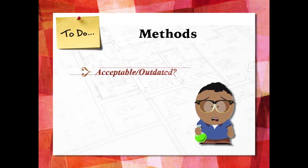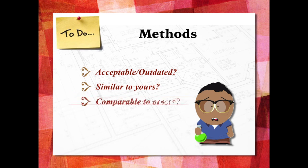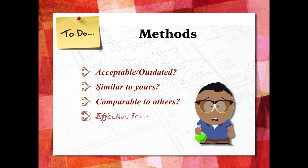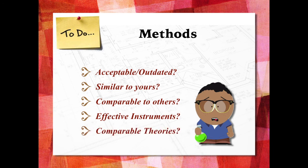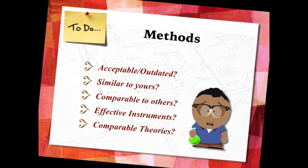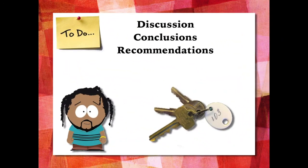Take a look at the methods in general. Are they acceptable or are they outdated? Are they similar to yours? Are they comparable to other methods in the other studies you've looked at? Are they using effective instruments? And are the theories behind the methods comparable to the other theories you've encountered? Finally, read the discussion and conclusion sections carefully. This is where the researchers sum up the importance of their study and make recommendations for further studies, policy implementation, or other uses of their findings. This is a key section that will help you better understand the bigger picture and tell us how this study informs, supports, or makes your research necessary.